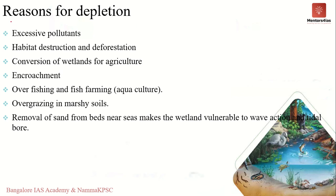Even though wetlands are very important, many are under tremendous pressure and being destroyed. Reasons include conversion of lands for agriculture, overgrazing, removal of sand from beds, habitat destruction, deforestation, pollution, climate change, encroachment, industrial effluents, and eutrophication. It is very important to take steps to prevent these causes, as wetlands perform essential functions for the survival of species and maintain the ecological balance as a transition zone between terrestrial and aquatic ecosystems.